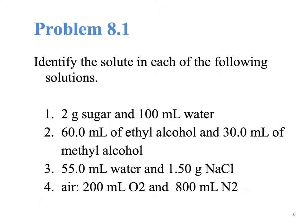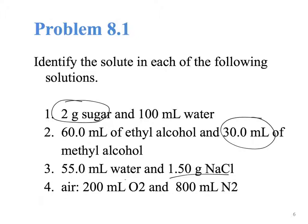Let's identify the solute in each one of the following solutions. The solvent is present in the largest amount and the solute in the smallest amount. When we have two grams of sugar in 100 milliliters of water, the solute is the two grams of sugar. For 60 milliliters of ethyl alcohol in 30 of methyl alcohol, methyl alcohol is the solute. For 55 milliliters of water and 1.50 grams of sodium chloride, the solute is sodium chloride. For air with 200 milliliters of oxygen and 800 of nitrogen, the solute is oxygen.